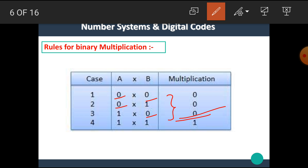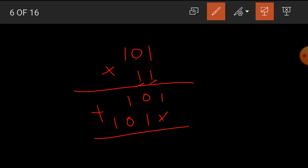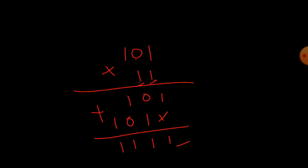For example, let's see the multiplication of 101 × 11. The multiplication process is similar to decimal. First, multiply by the rightmost bit 1: we get 1×1=1, 1×0=0, 1×1=1. Then, shifted one place, multiply by the next bit 1: we get 1×1=1, 1×0=0, 1×1=1. After addition: 1 plus 0 is 1, 0 plus 1 is 1, 1 plus 0 is 1, and 1 as it is. I hope you all understand.